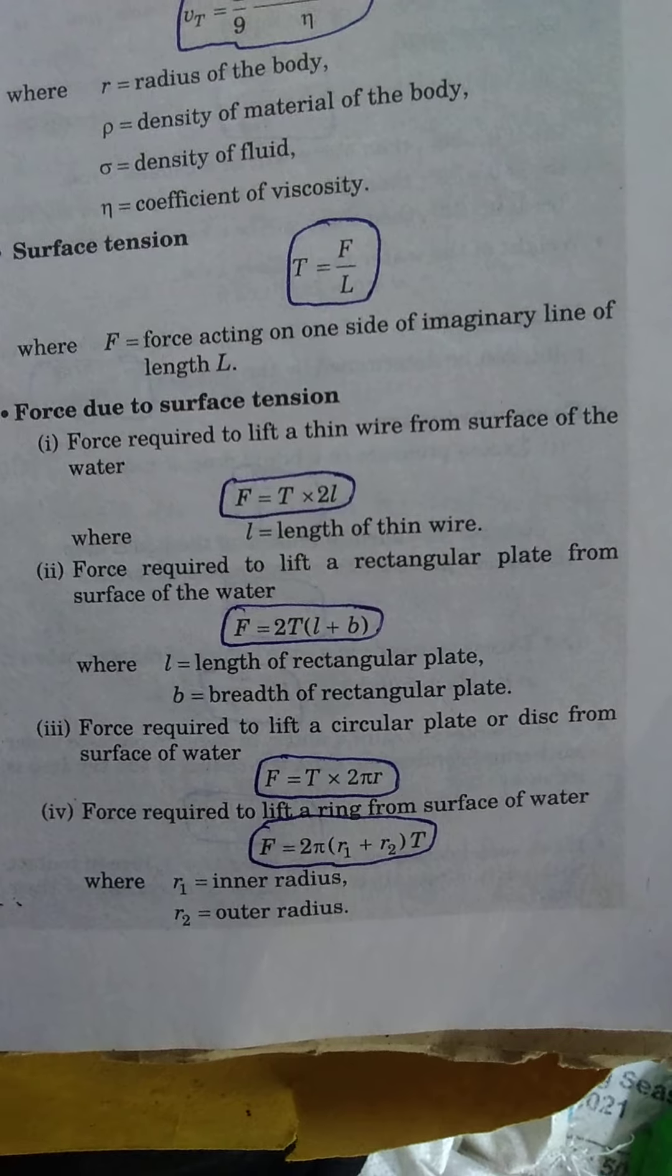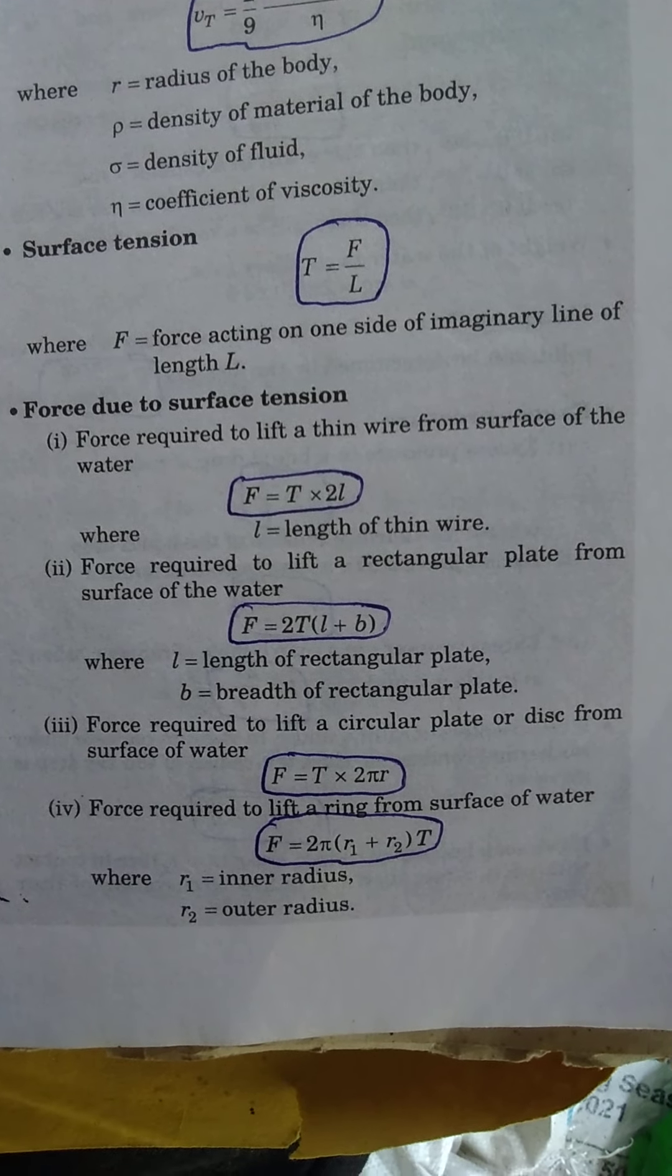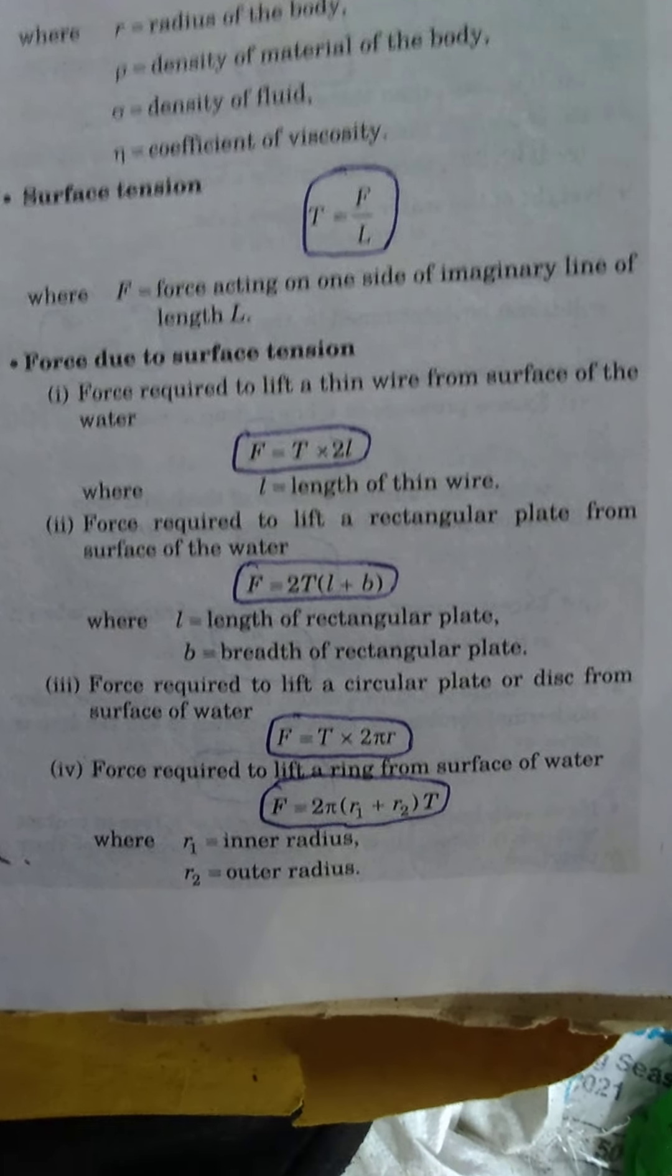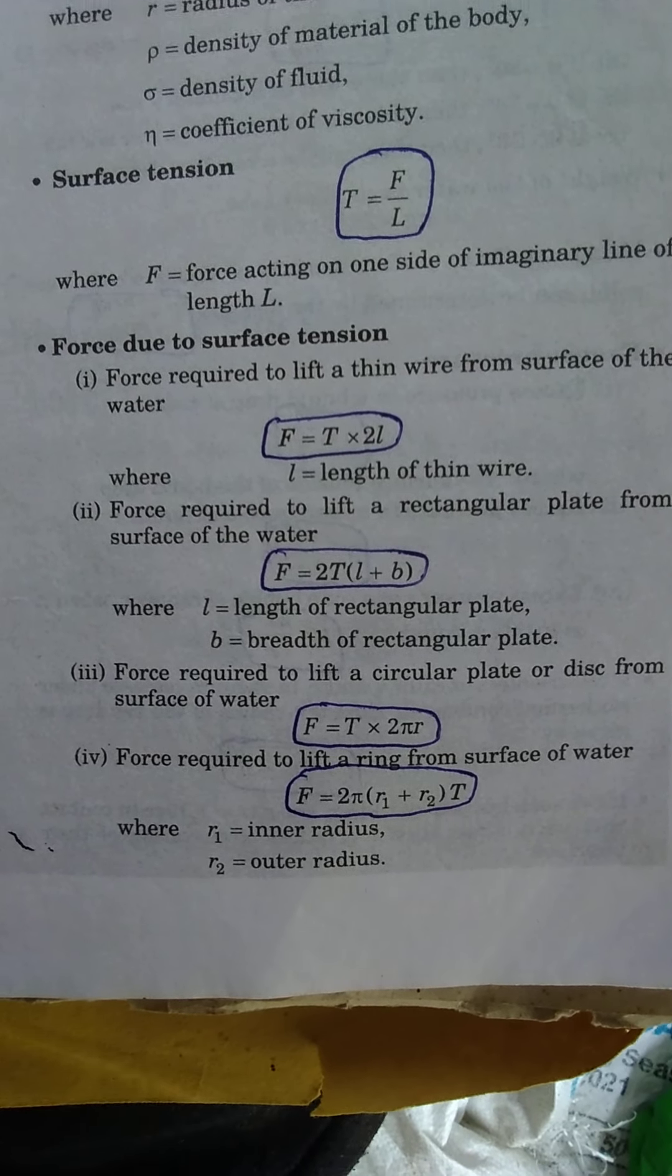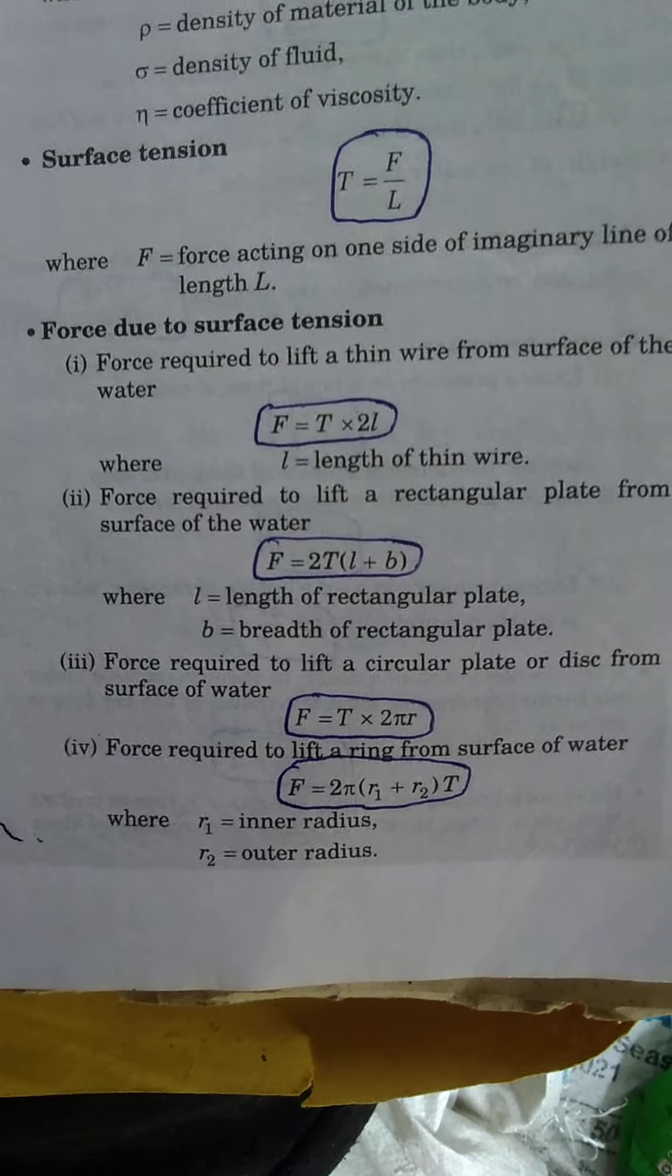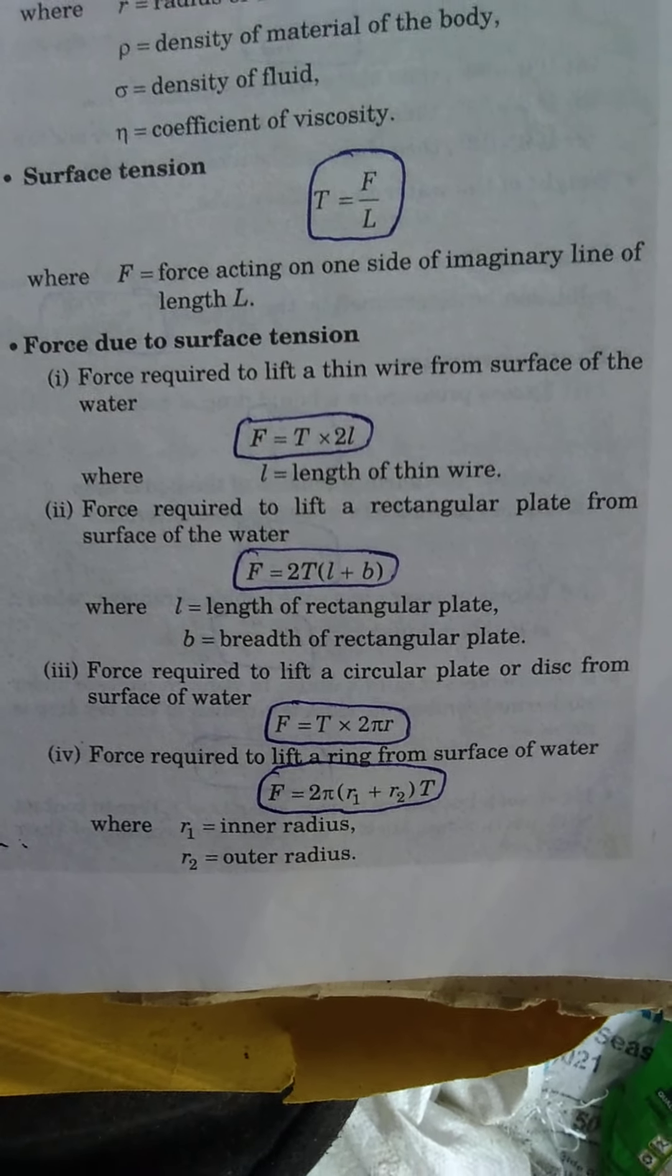Force required to lift a circular plate or disc from the surface of water: F equals T × 2πr. Force required to lift a ring from the surface of water: F equals 2πT(r₁+r₂), where r₁ is the inner radius and r₂ is the outer radius.